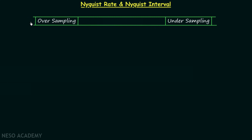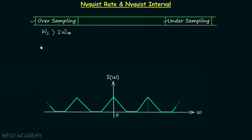We saw the case of oversampling and the case of undersampling. In oversampling, ΩS, the sampling frequency, is greater than twice of ΩM. ΩM is the maximum frequency component of the message signal. When this happens, the shifted spectrums of the message signal have sufficient gap between them with no overlapping, and therefore we can recover the message signal from the sampled signal. So this oversampling case is the preferred case — it is allowed.